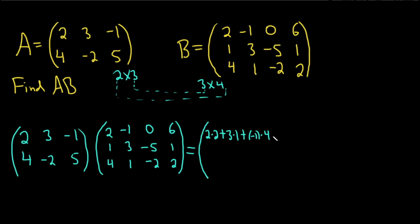Now the first row, second column. We still use the first row of A but now the second column of B: 2 times negative 1 is negative 2, plus 3 times 3 is 9, plus negative 1 times 1 is negative 1.